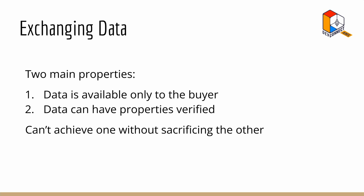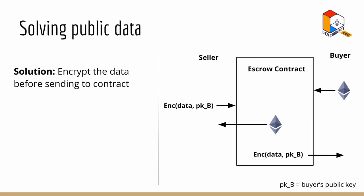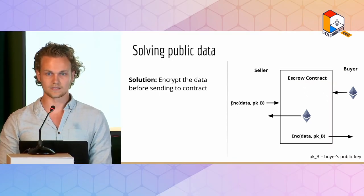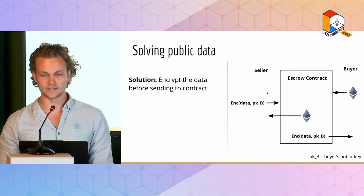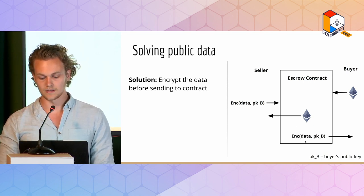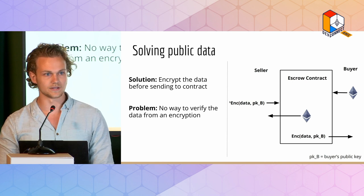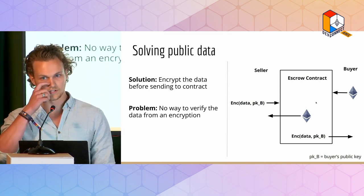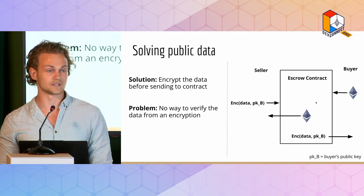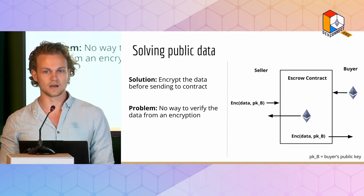This is why we're going to need ZK to empower both of these properties. First, if we wanted to solve the public data case, we could simply encrypt the data before sending it to the contract. The escrow exchange happens the same way, except the seller encrypts the data with the buyer's public key, so it's only available to the buyer. That solves our first case, but the problem is there's now absolutely no way to verify what the data actually is — with only the encryption on chain, the seller could be sending anything and retrieving the tokens for it.